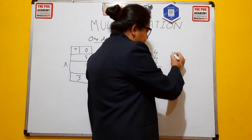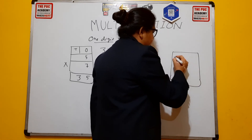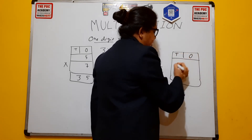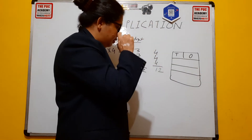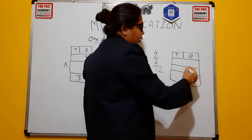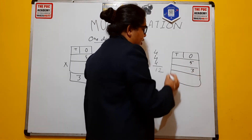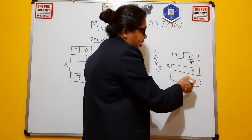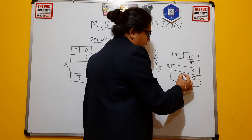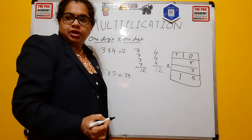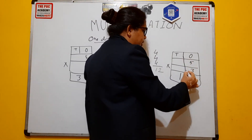Let's take another example in the box format. Write the ones and tens columns and take two rows for the two numbers. For 5 into 3, make one cross: 5 times 3 gives 15. The 5 comes at the ones position and 1 comes at the tens position. That is 5 into 3 equals 15.